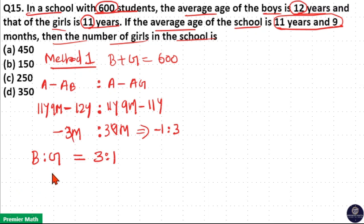Now, here, boys part is 3 parts, girls part is 1 part. Then, total number of girls is equal to girls part is 1 part. Total number of parts is 3 plus 1, 4 parts.